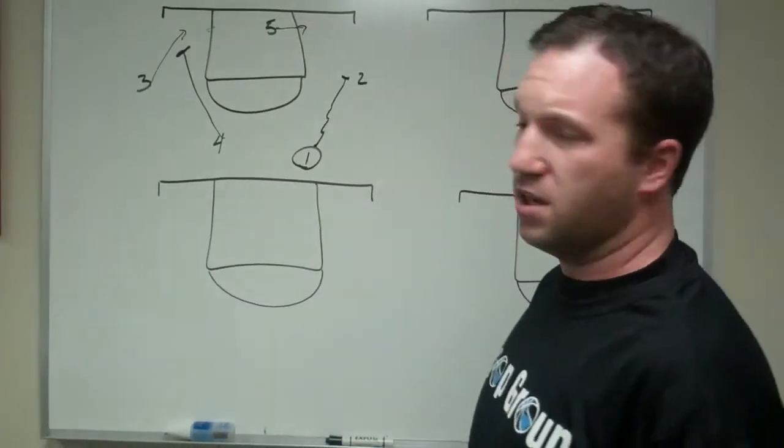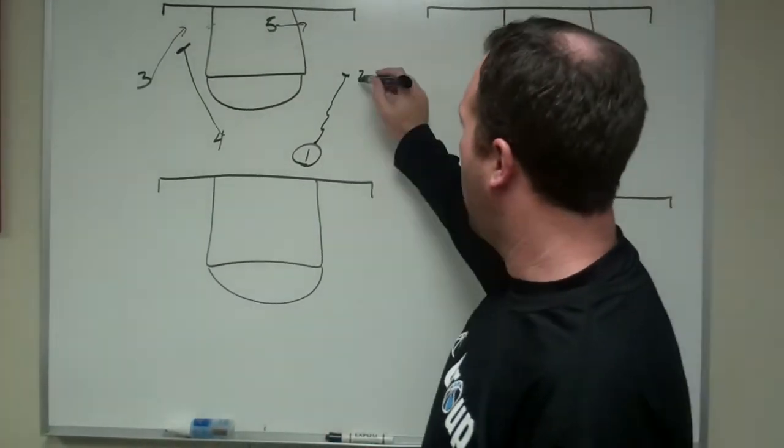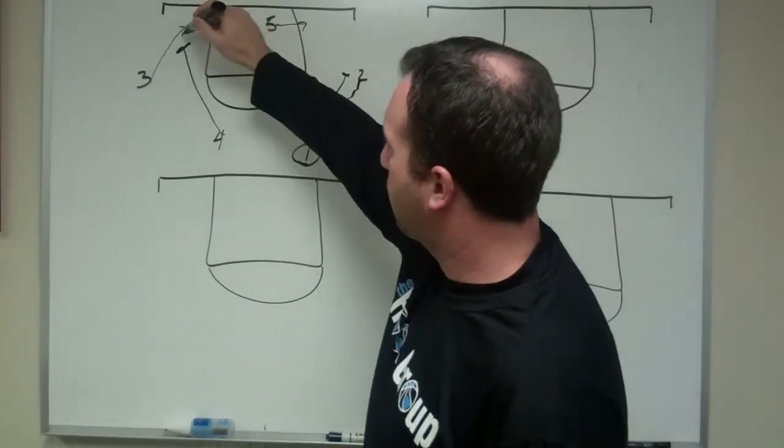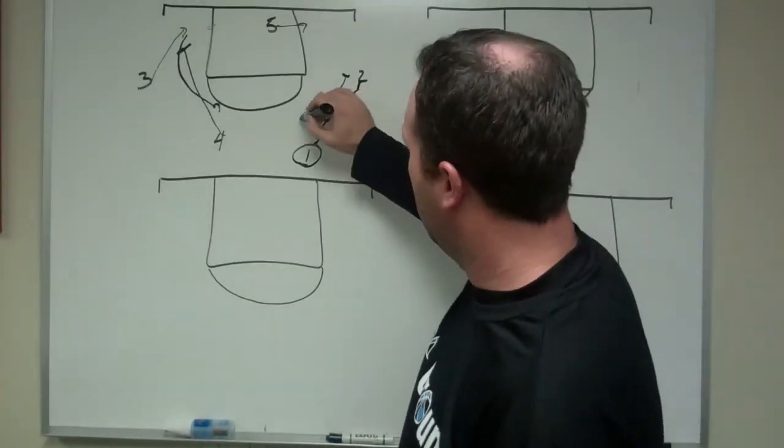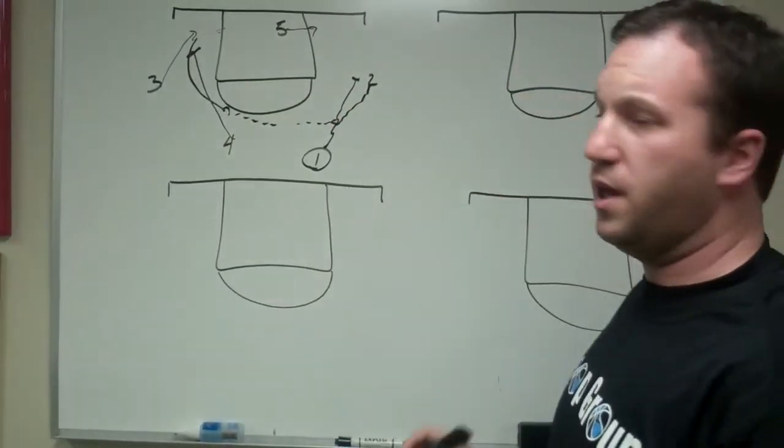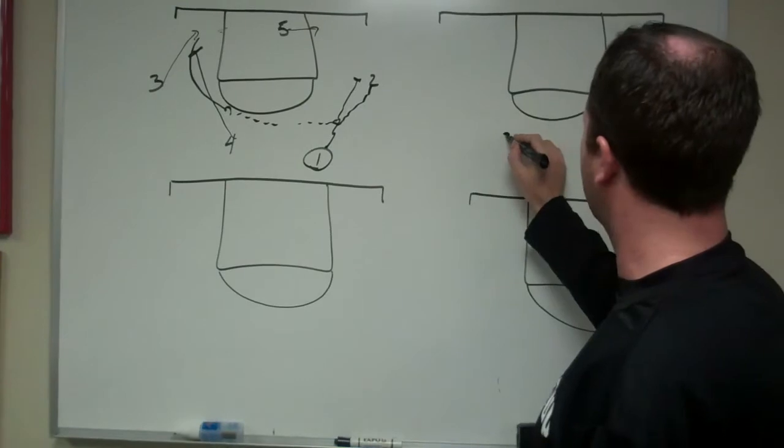The 5-man will follow the ball if he doesn't get it initially. As the 2-man comes off, the 3-man is trying to catch the ball on the 3-point line using that screen. Throw it 2-3 on that as he catches the ball.